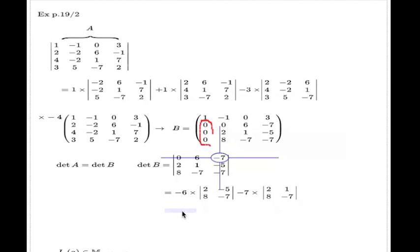Now if I finish this computation, I finish this here. This is 6, this one is negative 14 plus 40, it's 26. Negative 7 times, here we have negative 14, negative 14, negative 8, it's negative 24, 22.